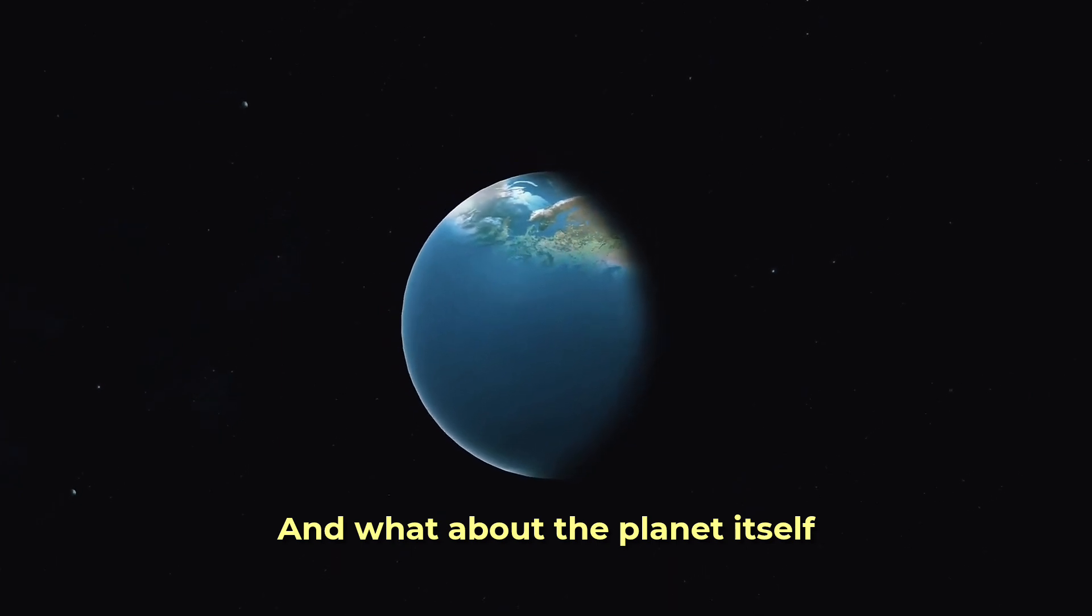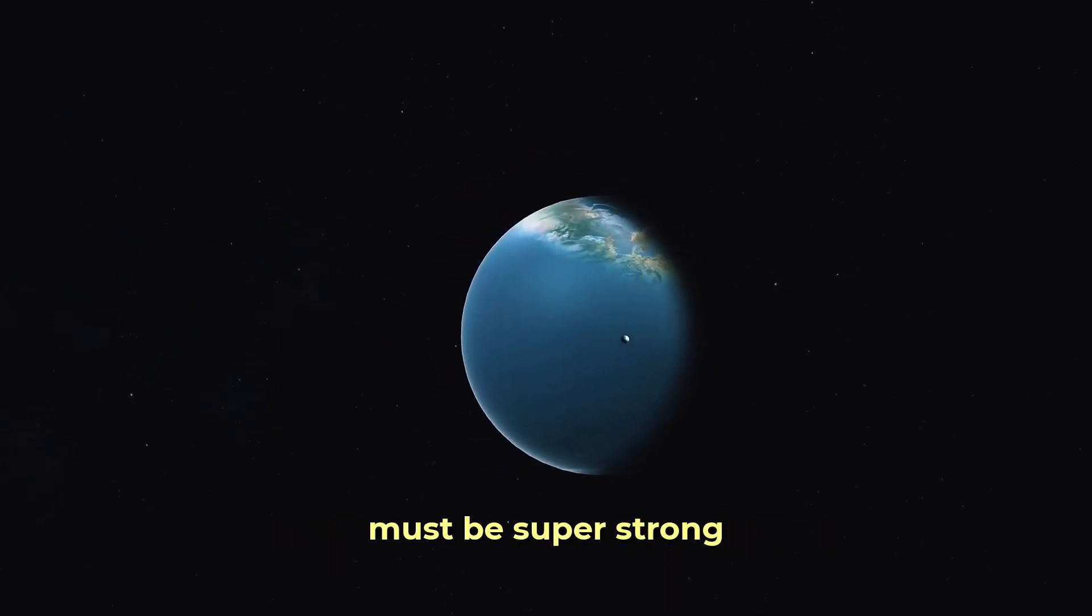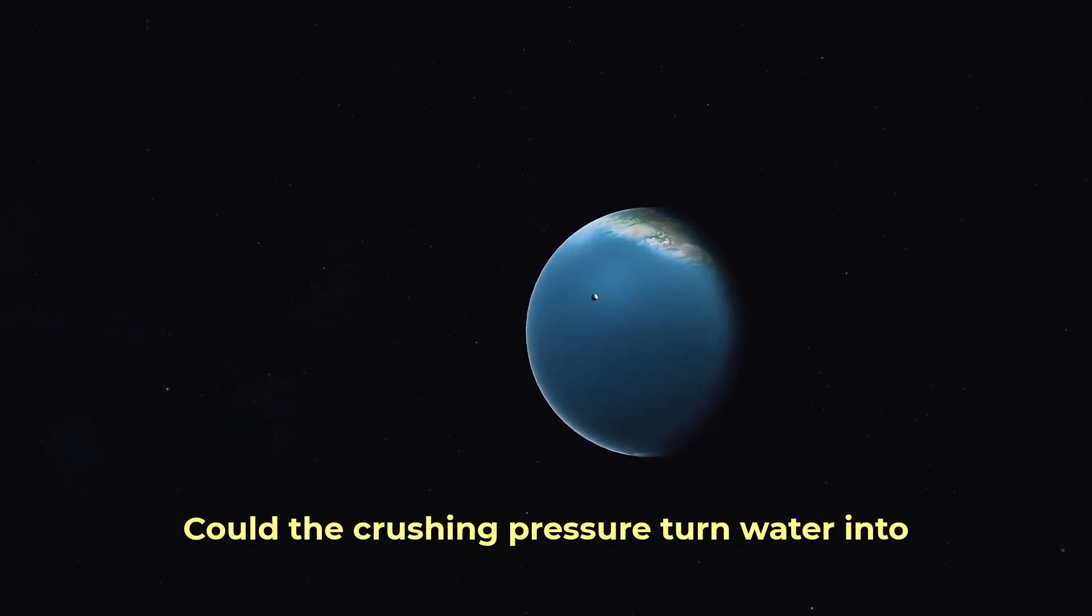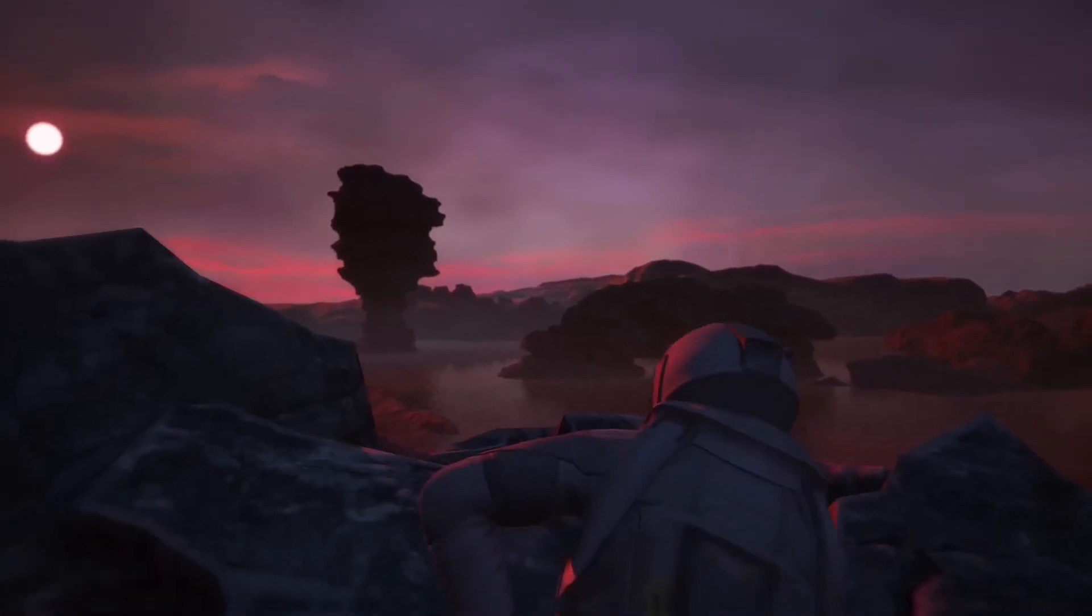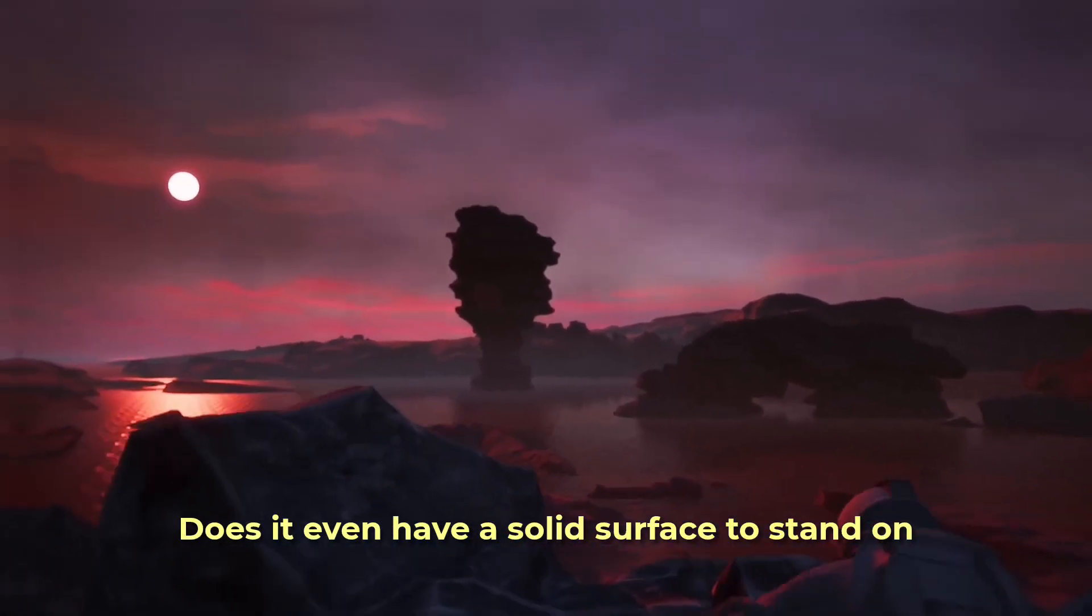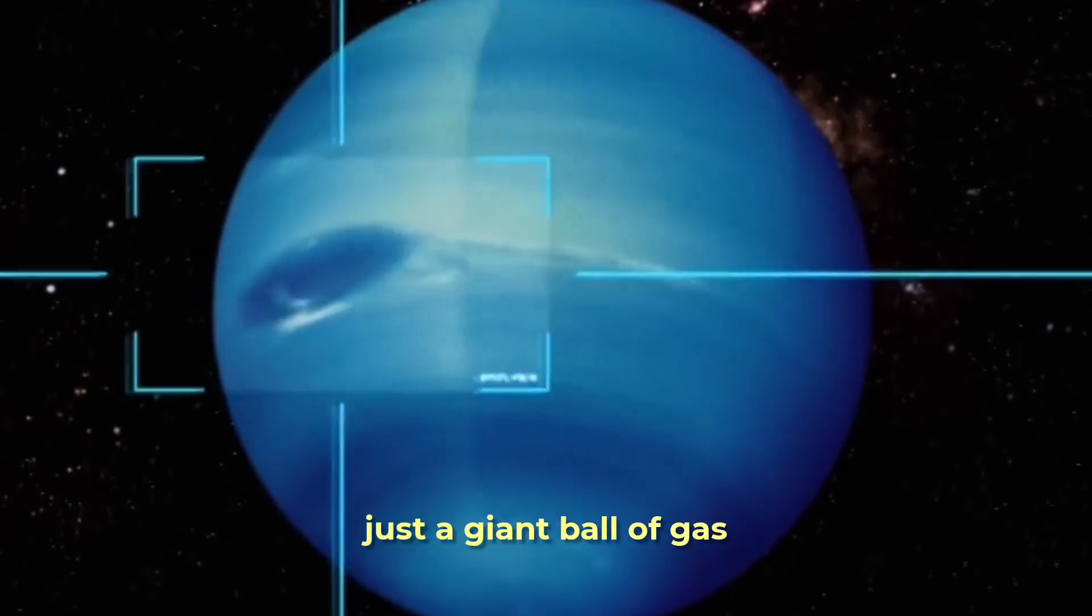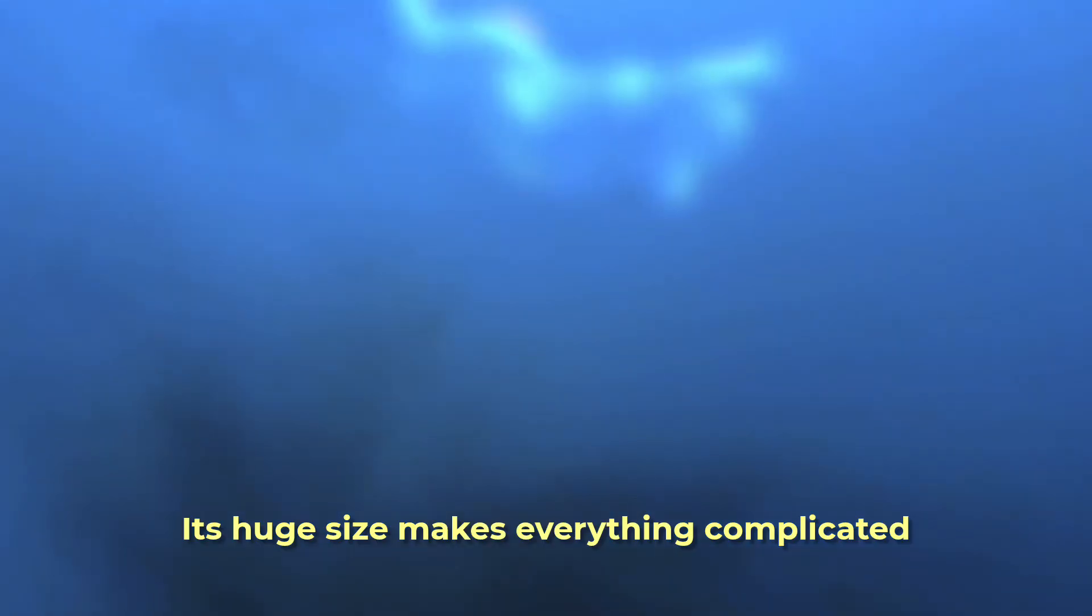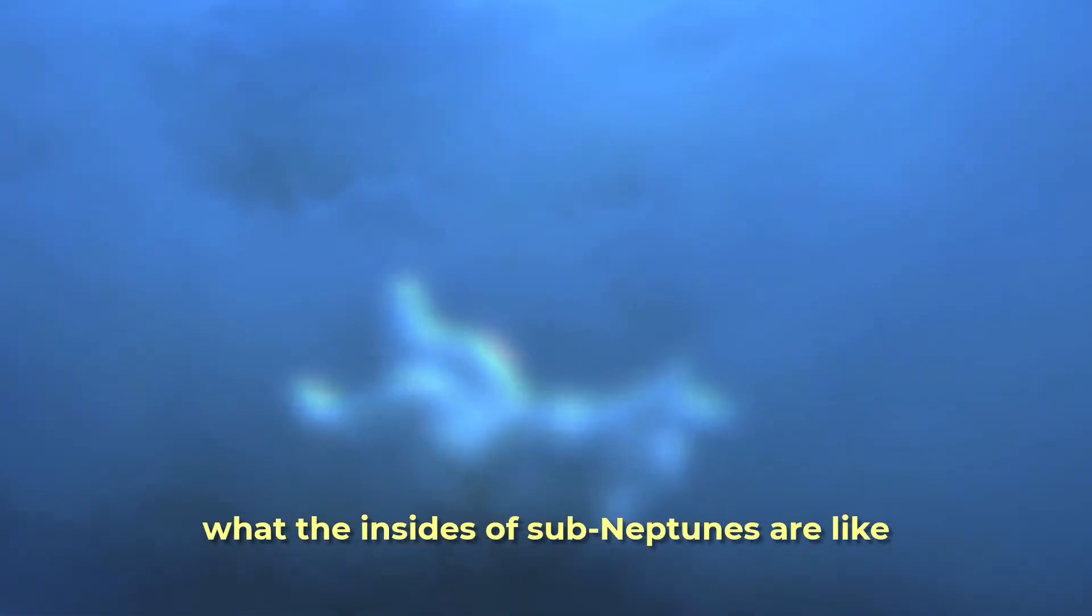And what about the planet itself? It's so heavy, the pull of gravity there must be super strong. What's deep inside? Could the crushing pressure turn water into weird kinds of solid ice, even if it's warm? Does it even have a solid surface to stand on? Maybe it's more like Neptune, just a giant ball of gas that gets thicker and thicker towards the middle. Its huge size makes everything complicated. We don't really know what the insides of sub-Neptunes are like.